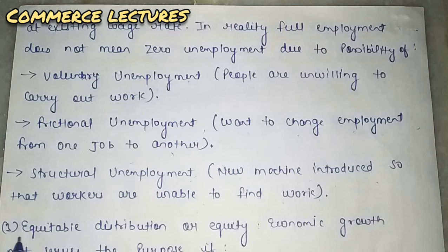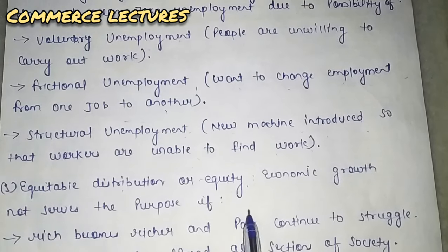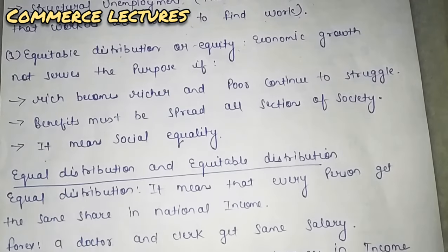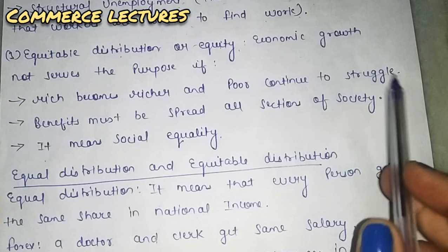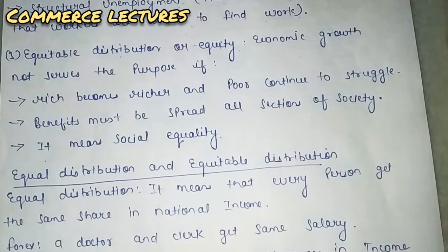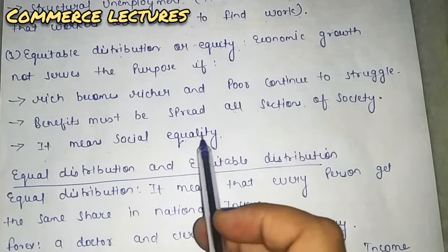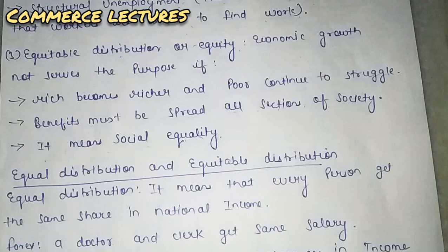The next long term goal is equitable distribution or equity. Economic growth does not serve its purpose if rich become richer and the poor continue to struggle. Benefits must spread to all sections of society. This means social equality — it should not happen that rich people gain more while poor people gain less.